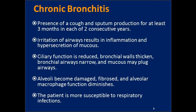Chronic bronchitis is the first disease process under COPD. It is characterized by a cough with sputum production for at least three months in at least two consecutive years. This isn't bronchitis you get over — this is somebody who has bronchitis for at least three months every year for at least two years or more. It doesn't resolve easily, and even when it does, it's prone to come back.